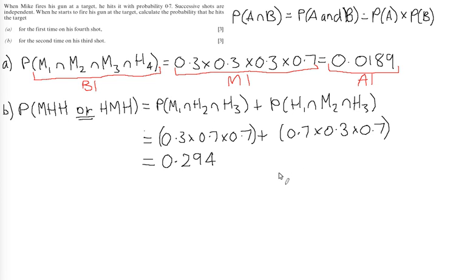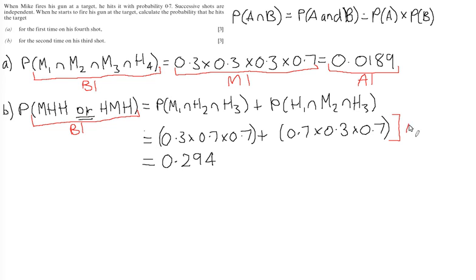For the marks on Part B: first, a standalone statement mark for indicating there are two ways Mike can hit the target for a second time on his third shot. Then a method mark for demonstrating how to multiply the probabilities for each event and sum them together. Finally, an accuracy mark for the correct final answer of 0.294.